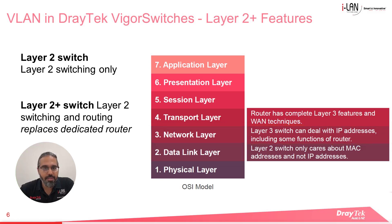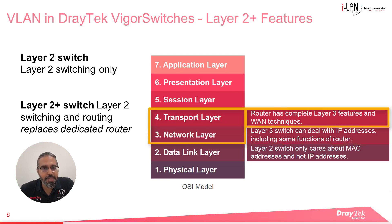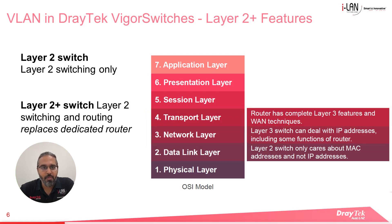Routers also operate in the transport layer, so have complete Layer 3 features as well as some WAN techniques. While it does not include the complete Layer 3 features of a router, a Layer 2 Plus VigorSwitch can reduce the load on the main router by handling inter-VLAN routing as well as DHCP services.